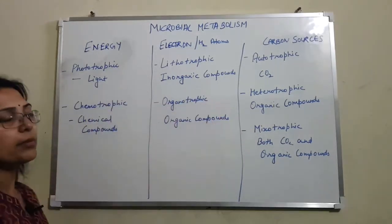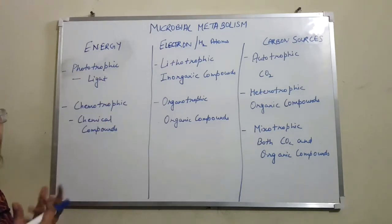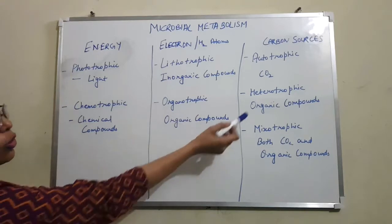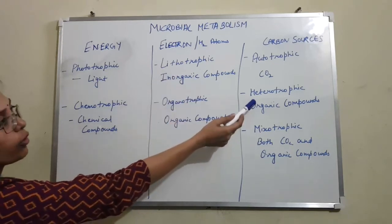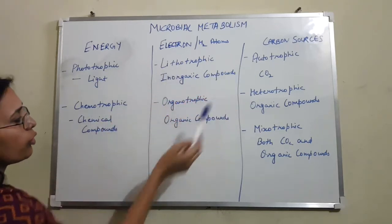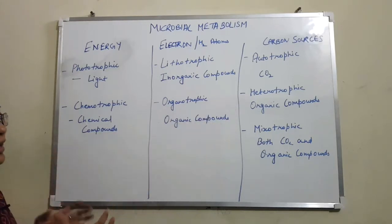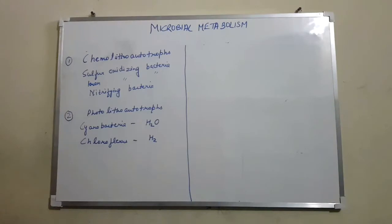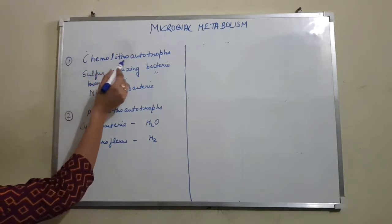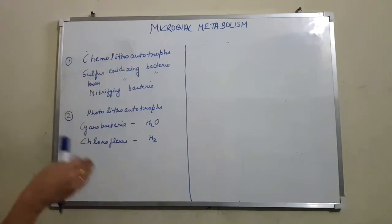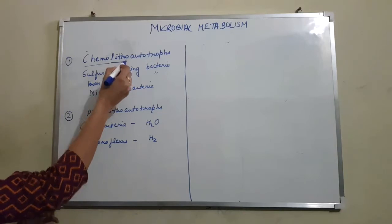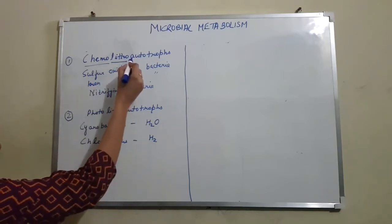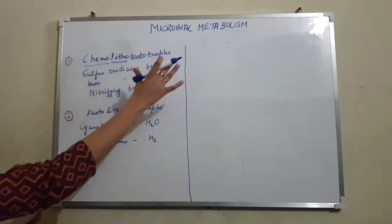These terms can be combined based on the preferences of a particular microorganism. For example: photo-litho-heterotrophic, photo-litho-autotrophic, chemo-litho-heterotrophic, chemo-litho-autotrophic, or chemo-organo-heterotrophic. Always remember the sequence when combining these terms: first comes the energy source, then comes the source of electron or hydrogen atom (reducing equivalents), and finally comes the carbon source.